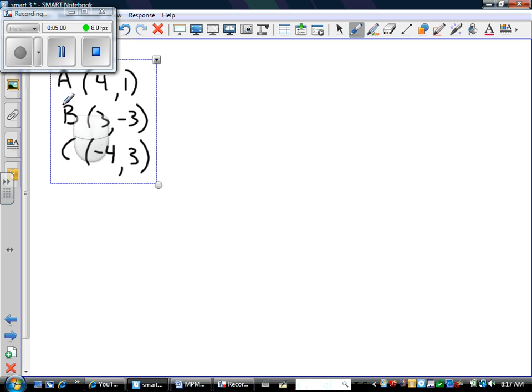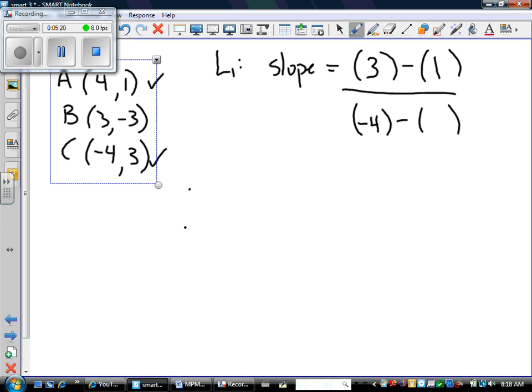So let's talk about line one. Line one, again, line one used points A and C. So the slope would be, we'll use the slope formula. So y2 minus y1 over x2 minus x1. So again, I'm using points A and C. So I'm going to get 2 over negative 8, which is negative a quarter. That's the slope of line one.